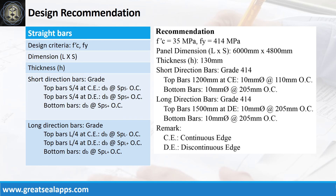Design recommendations: f'c equals 35 MPa, fy equals 414 MPa. Panel dimension: 6,000 mm by 4,800 mm. Thickness: 130 mm. Short direction bars, grade 414 — top bars at continuous edge (1,200 mm): 10 mm bar at 110 mm on center. Bottom bars: 10 mm bar at 205 mm on center. Long direction bars, grade 414 — top bars at discontinuous edge (1,500 mm): 10 mm bar at 205 mm on center. Bottom bars: 10 mm bar at 205 mm on center.